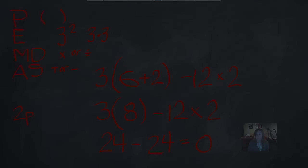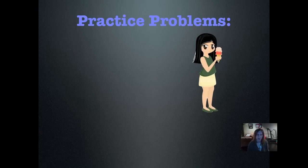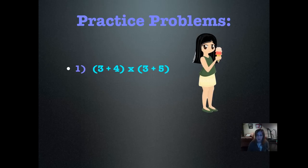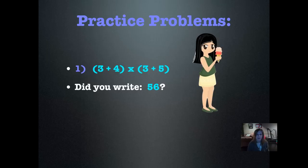Now let's try some practice problems. On each problem, you'll probably want to write PEMDAS vertically before that problem or at the top of your journal page so you can remember what order the steps go in. Every time you write it down, just say to yourself, 'Please excuse my dear Aunt Sally.' Here's number one — go ahead and write that problem in your journal, solve it using PEMDAS, and push play when you're ready. Did you write 56?